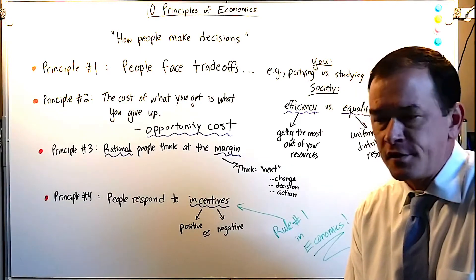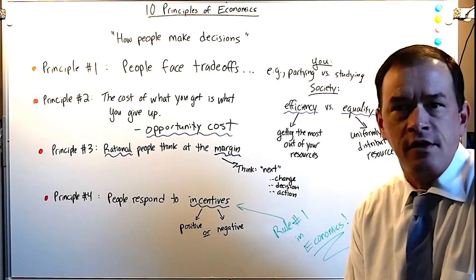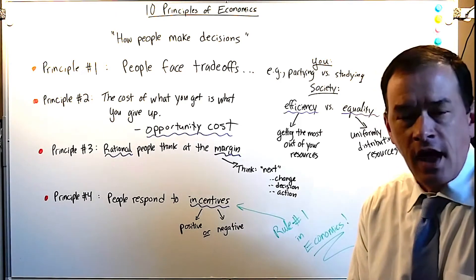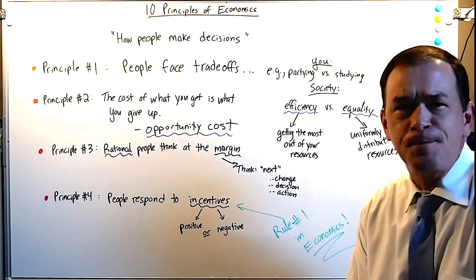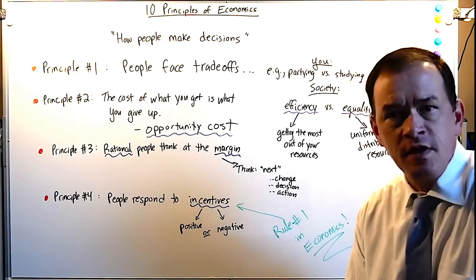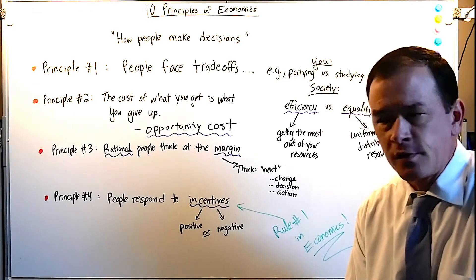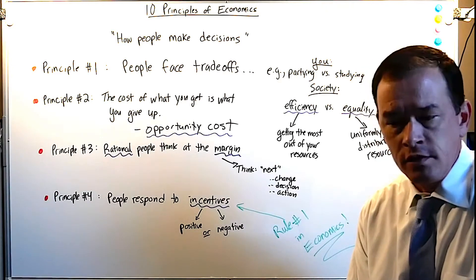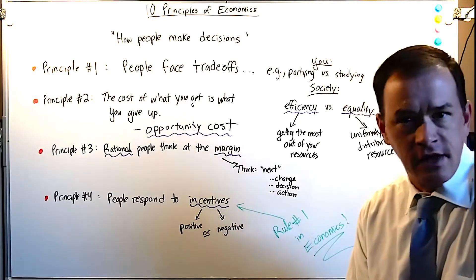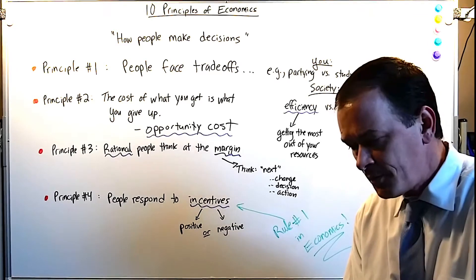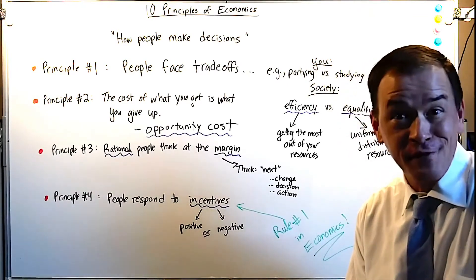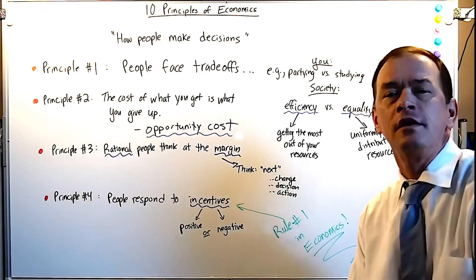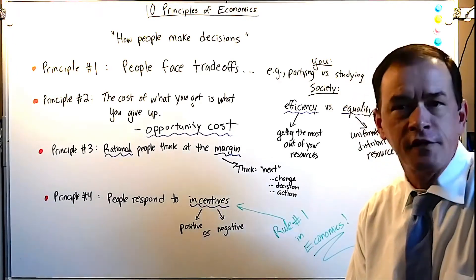These principles are divided into three overarching categories. We're going to take care of the first category today — how people make decisions. These are principles that guide how folks make decisions about allocating their scarce resources. But what is scarcity? It's something that you don't have enough of. A lot of people think money is the most scarce thing, but actually time is the most scarce, followed closely by opportunity.